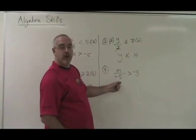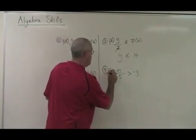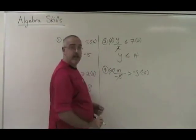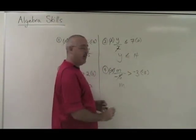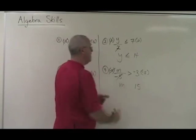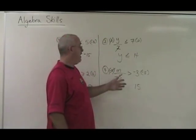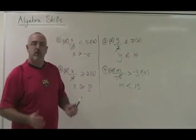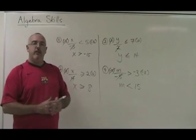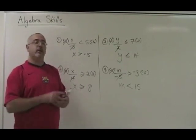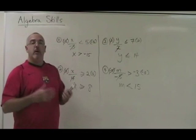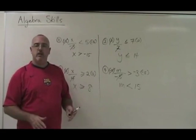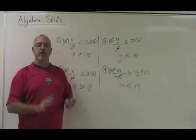Here, my m is being divided by negative 5. I have to multiply both sides by negative 5. These negative 5's cancel. My m is isolated. Negative 3 times negative 5 is positive 15. But because I multiply both sides of the equation by a negative number, the symbol has to flip backwards. So now we can restate the rule more exactly: if you divide or multiply both sides of an inequality by a negative number, you must flip the inequality symbol backwards. But if you multiply or divide both sides by a positive number, you leave the symbol alone.